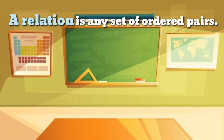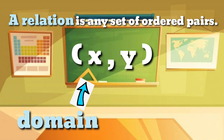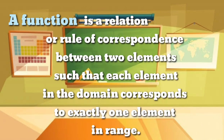A relation is a set of ordered pairs. The best example of this is x and y, where x, the first element, is called the domain of the relation, while y, the second element, is called the range. A function is a relation or rule of correspondence between two elements such that each element in the domain corresponds to exactly one element in the range.